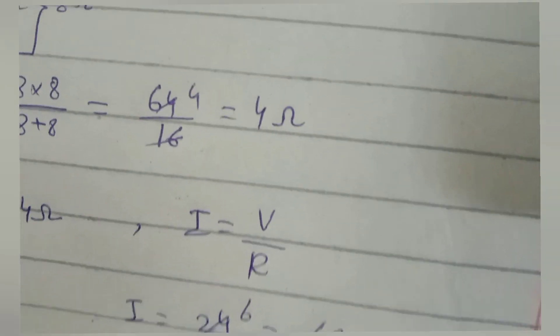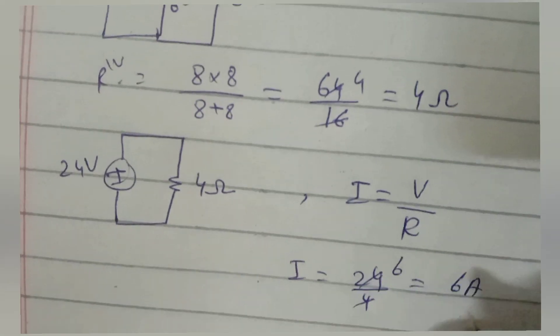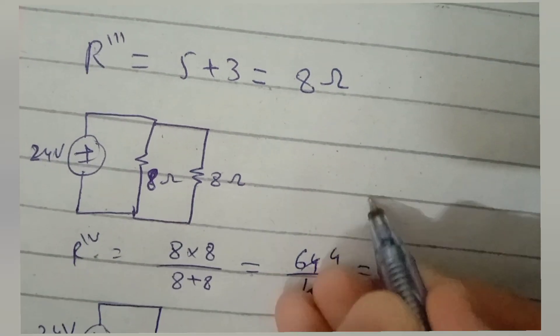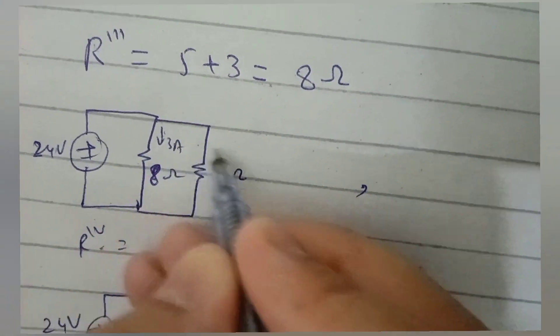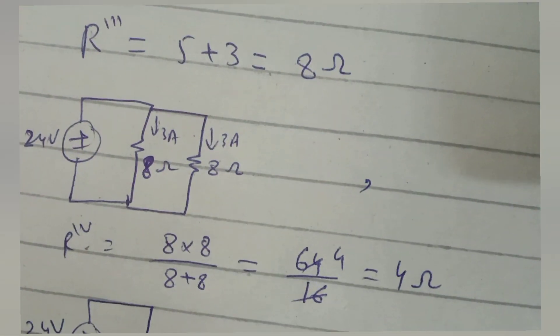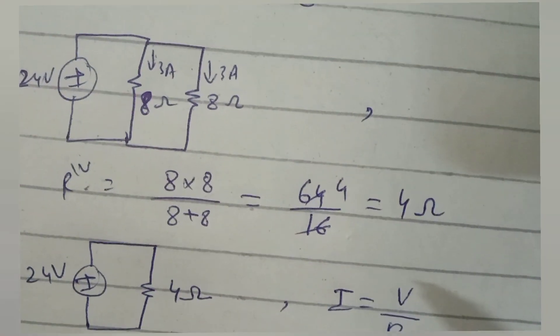Now we will go back sequentially at each step to find current in each resistor. As same value resistors are connected in parallel, the 6 amperes will be equally divided in both branches. This means 3 amperes will flow through each branch.